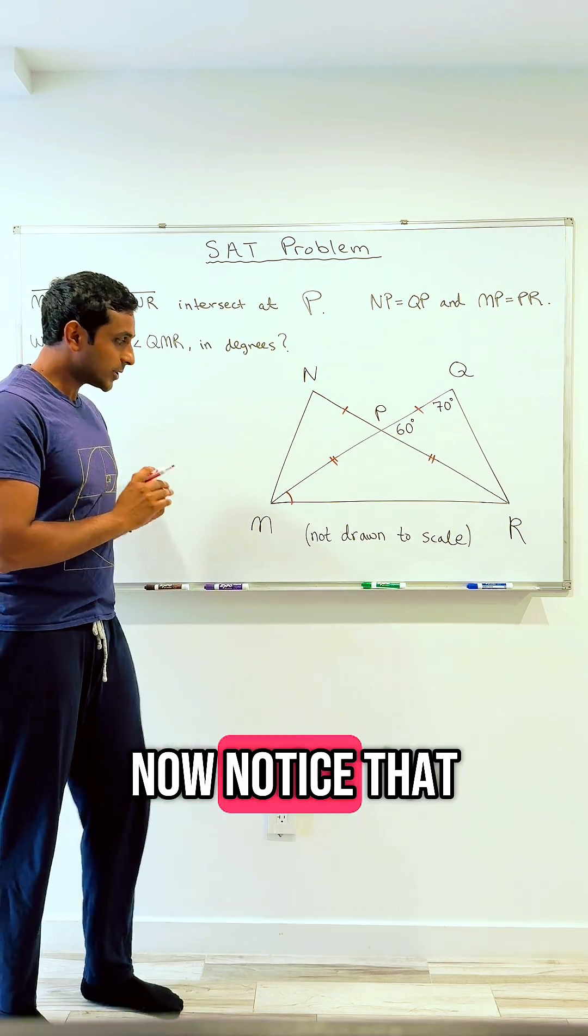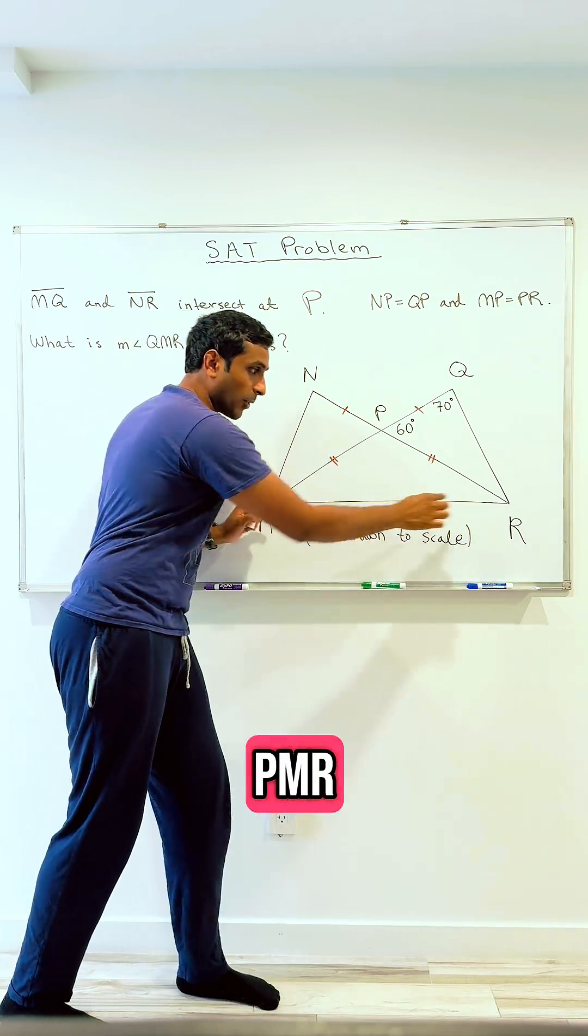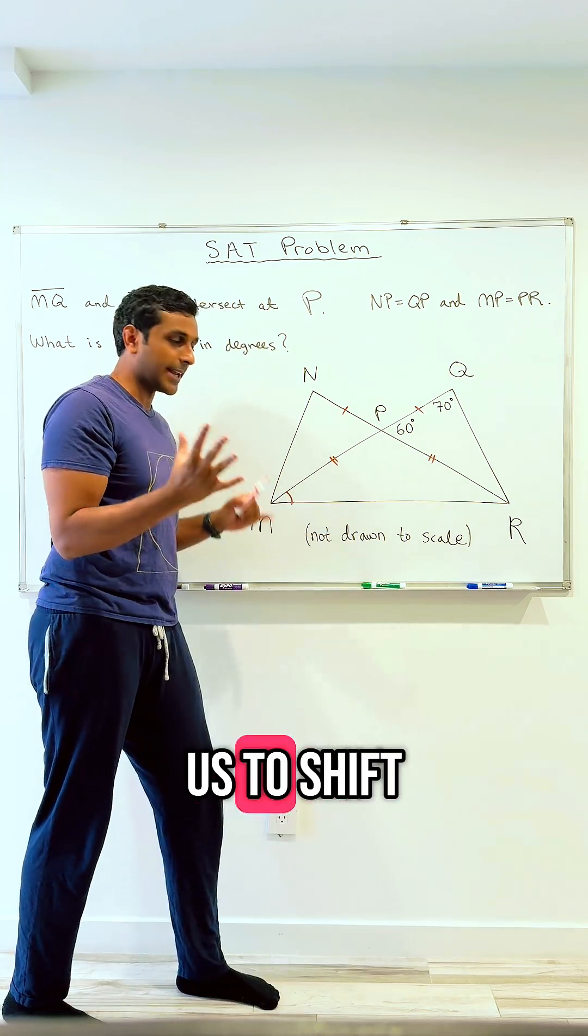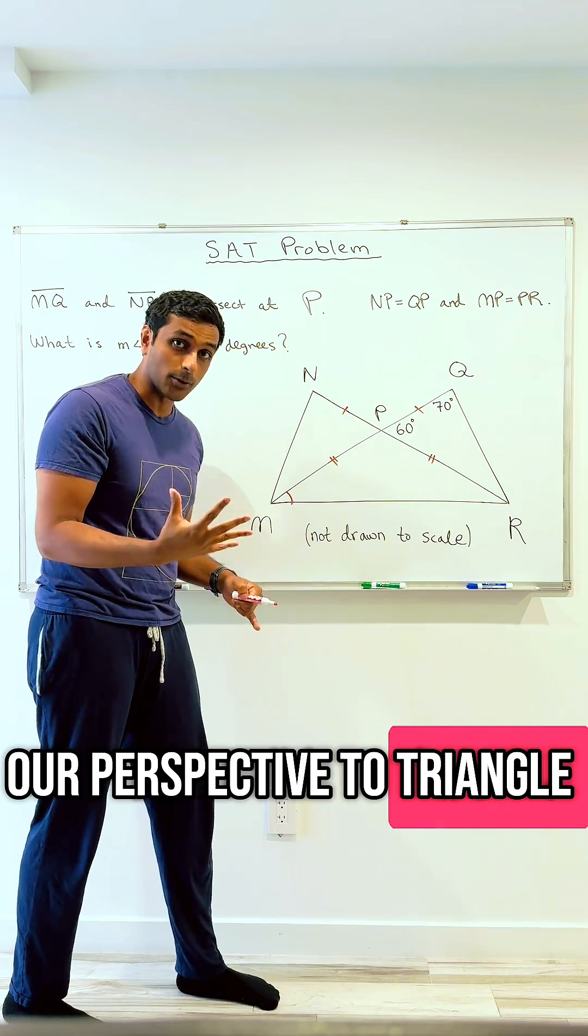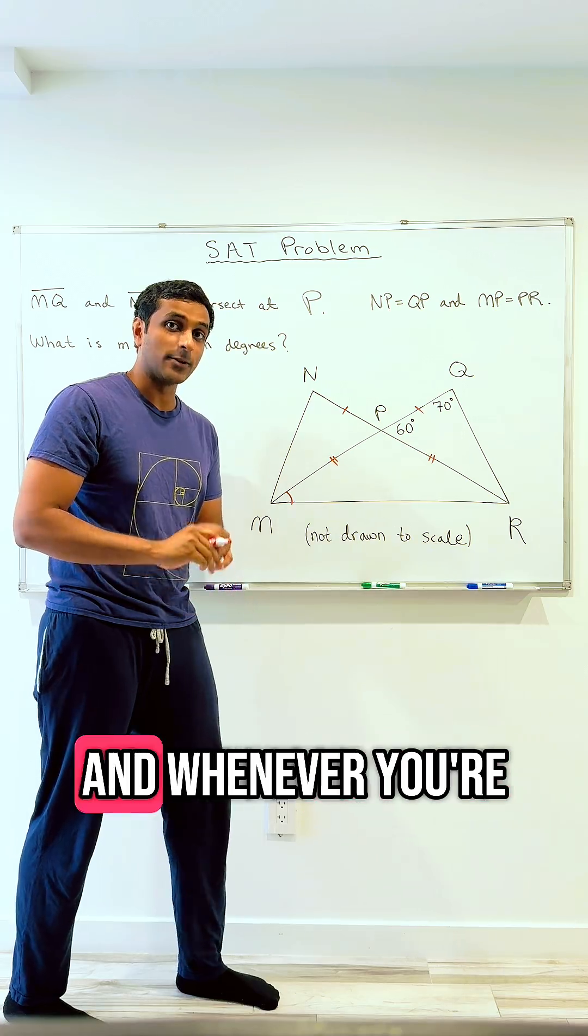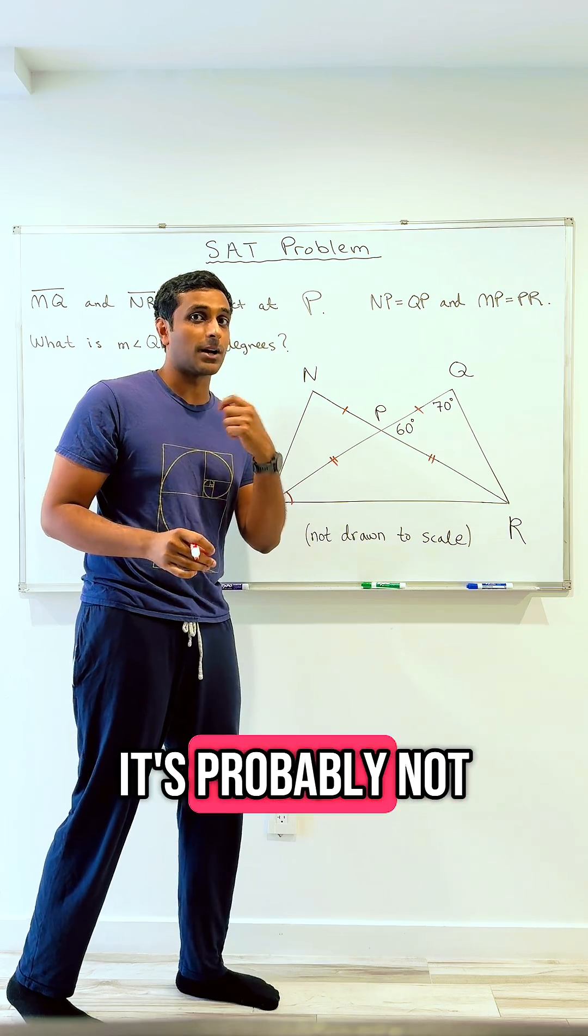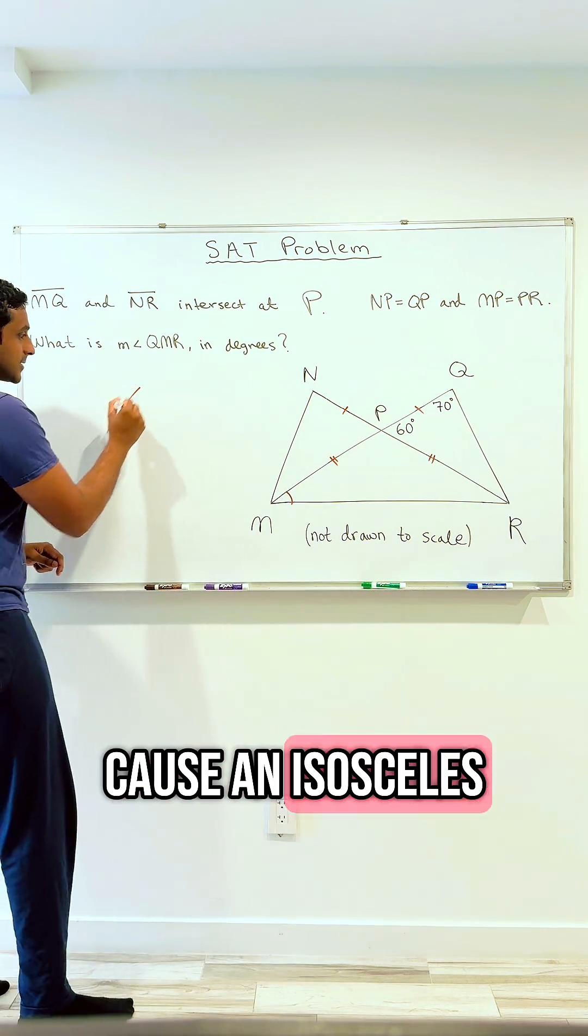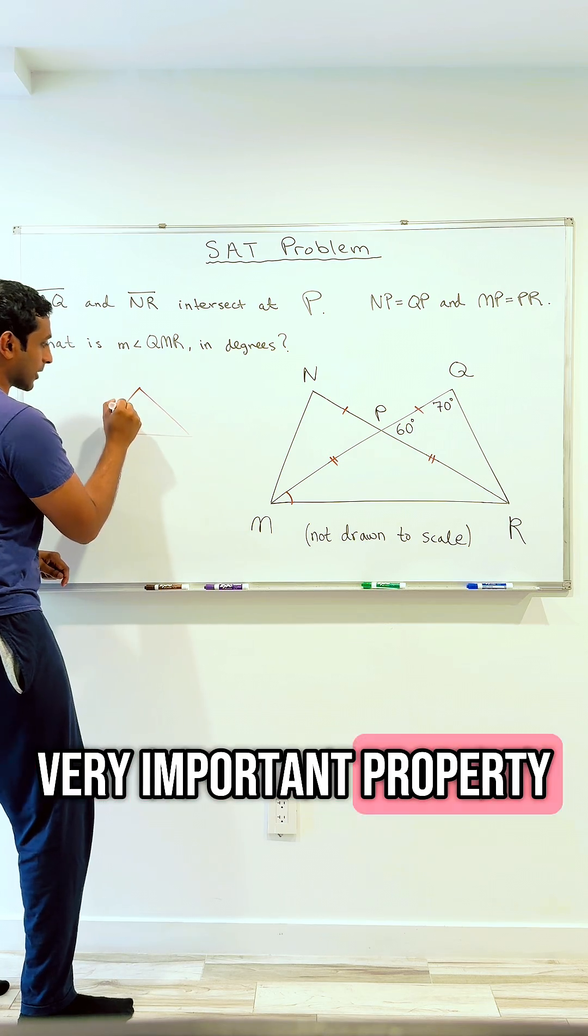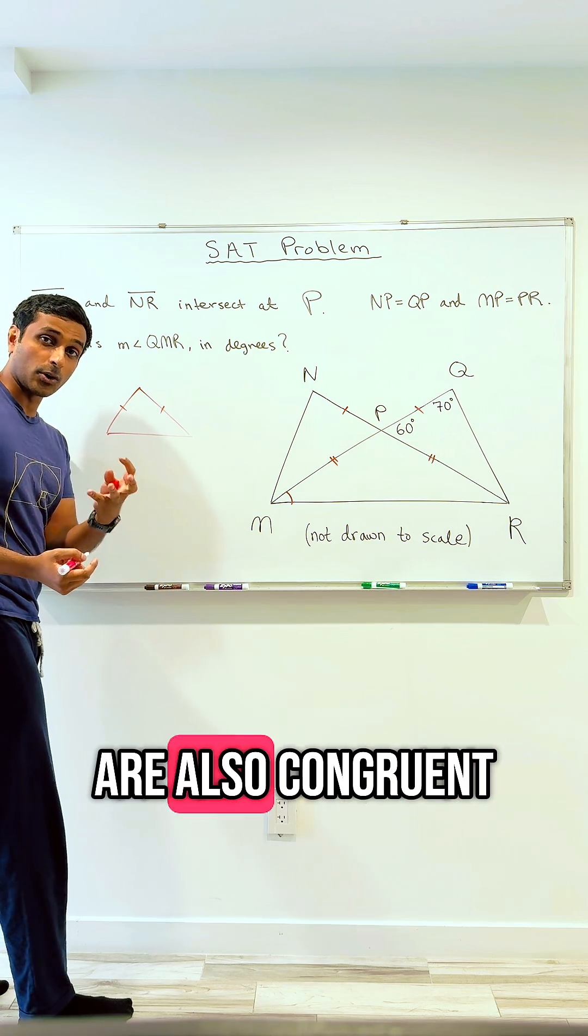Now notice that angle QMR is the same angle as PMR. It's kind of obvious, but it allows us to now shift our perspective to triangle PMR, which is an isosceles triangle. And whenever you're taking the SATs or any test and you see an isosceles triangle, it's probably not an accident, because an isosceles triangle has a very important property, which is that the angles opposite the congruent sides are also congruent.